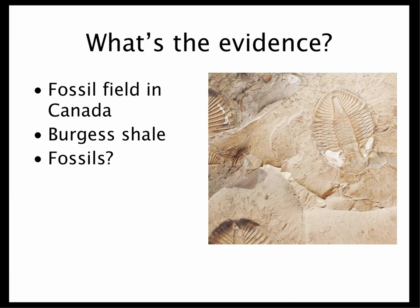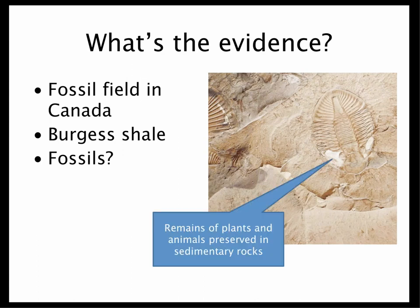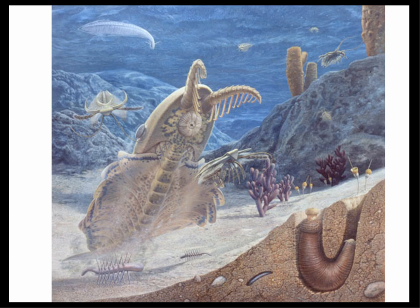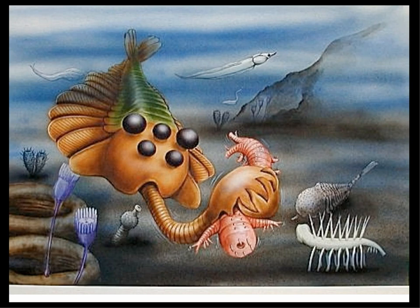The Cambrian Explosion is called an explosion because over millions of years you get lots and lots of complex new species occurring. What's the evidence? Fossils — a huge fossil field in Canada called the Burgess Shale. Fossil evidence from all over the Earth shows that below 550 million years ago there's no evidence of complex life, but after 550 million years ago, complex life forms appear. These fossils allow us to see the shape and structure of these early primitive life forms — remains of plants and animals preserved in sedimentary rocks. Some of these creatures from the Cambrian Explosion look very, very strange and alien to modern eyes.